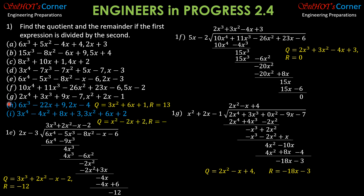For your part, so that you can actively participate and I can guarantee that you're learning: the answer for problem H is quotient 3x squared plus 6x plus 1 and the remainder is 13. For part I, the quotient is x squared minus 2x plus 2 and the remainder is negative 1. That's it for this video — I hope you enjoyed watching, and I hope you also learned, especially high school students.